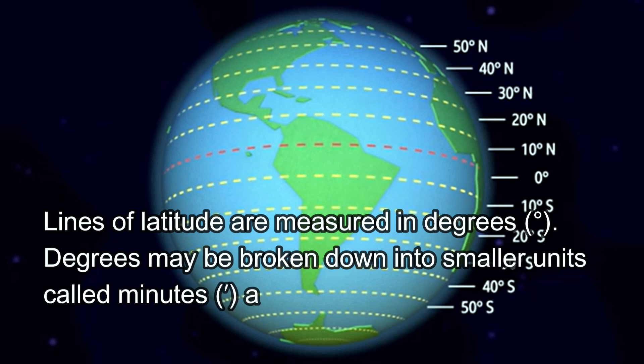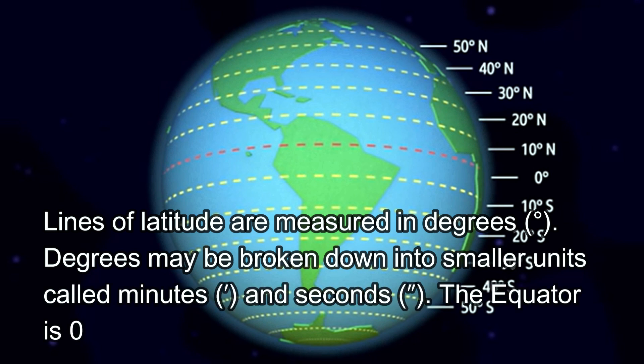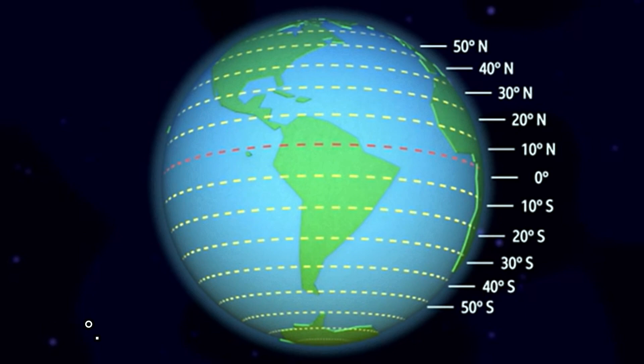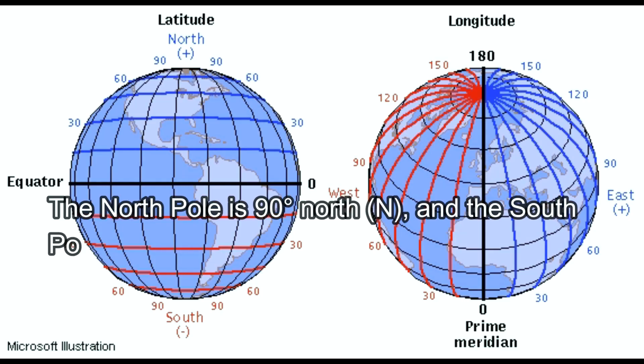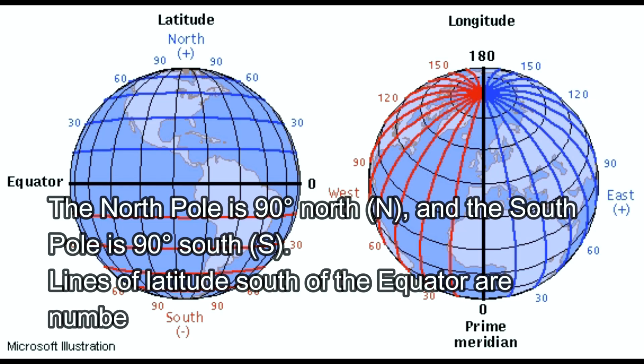Lines of latitude are measured in degrees. The degrees may be broken into smaller units called minutes and seconds. The equator is 0 degrees. The north pole is 90 degrees north, whereas the south pole is 90 degrees south. Lines of latitude south of the equator are numbered from 1 degree to 90 degrees south.